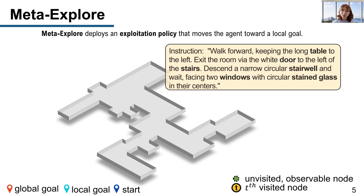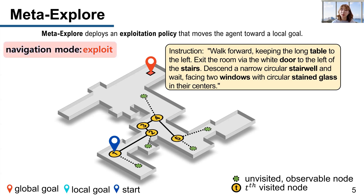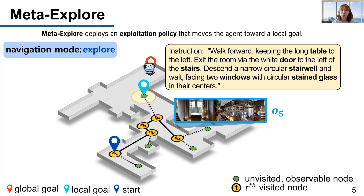First, the instruction is given and the episode is initialized. The agent begins to explore the environment and constructs a topological map. After a few time steps, the agent finds that its current trajectory is not following the instruction. Then, the agent starts to exploit and searches for a local goal from the unvisited but observable nodes. After moving toward the local goal, the agent restarts exploration. This process repeats until the agent arrives at the global goal.